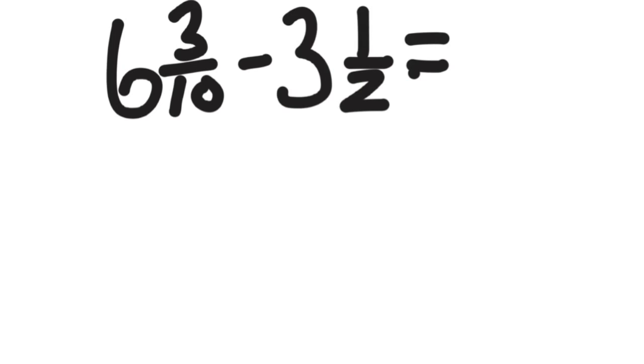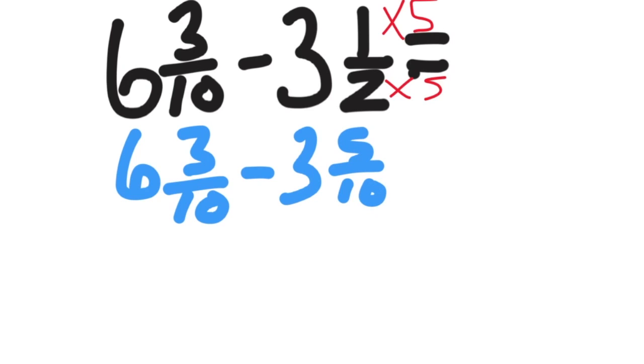Here we have 6 and 3 tenths minus 3 and 1 half. We still make sure that we have common denominators when we add and subtract mixed numbers. And the common denominator in this case is 10, so it's 6 and 3 tenths minus 3 and 5 tenths.